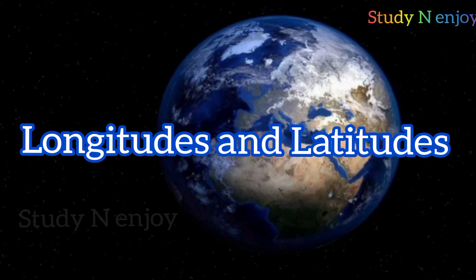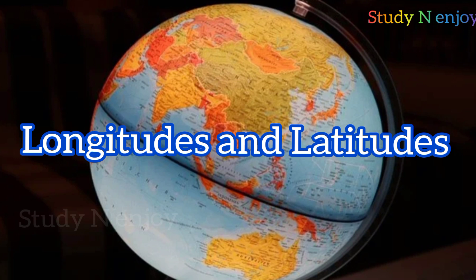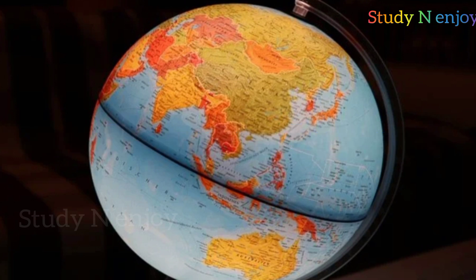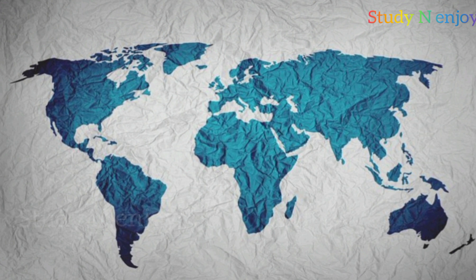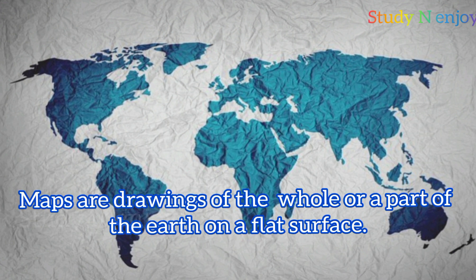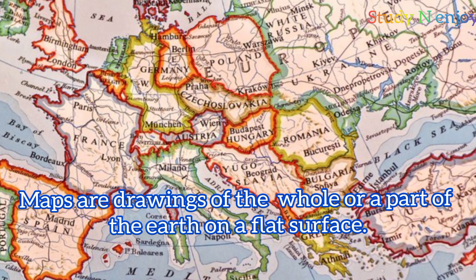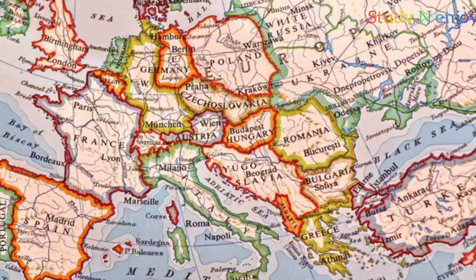Hi everyone, we have already studied about globes and maps. A globe is an exact model of earth. Maps are drawings of the whole or a part of earth on a flat surface. In short, maps and globes are showing earth.